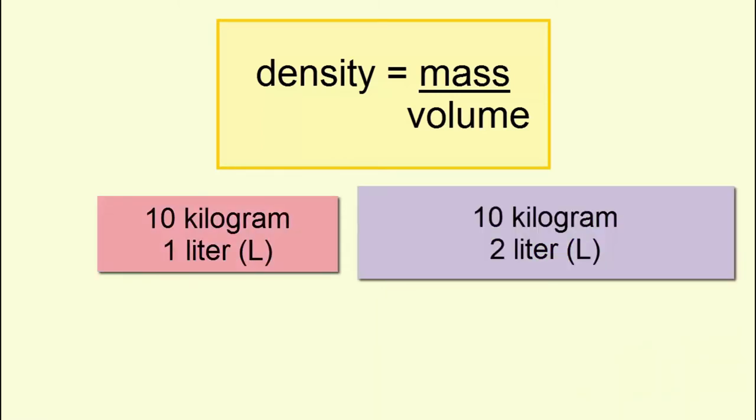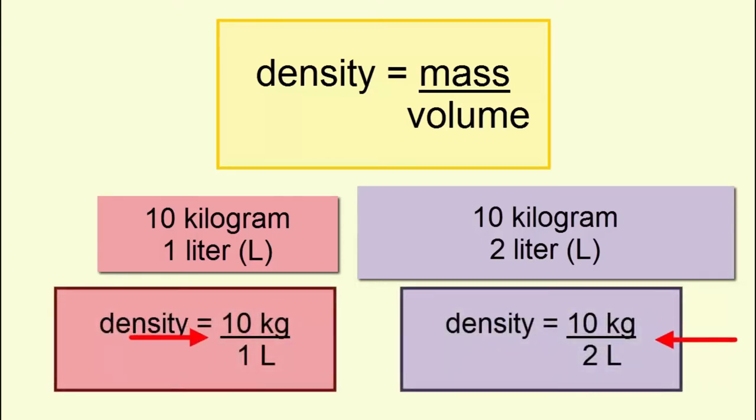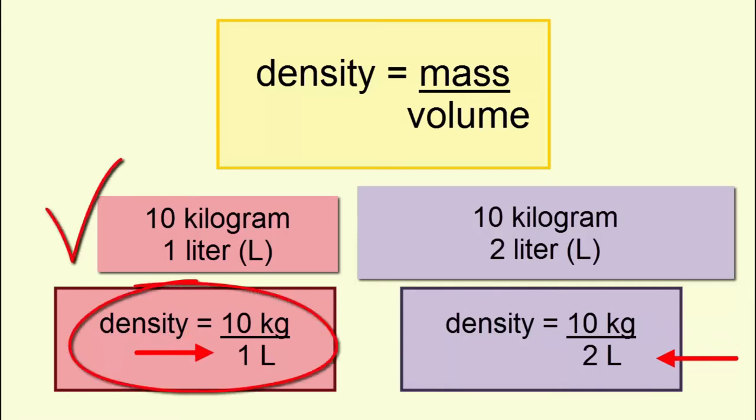Now imagine two objects of the same mass but different volumes. Same numerator, different denominators. Which is denser? The object with the smaller volume, denominator, is the denser one.